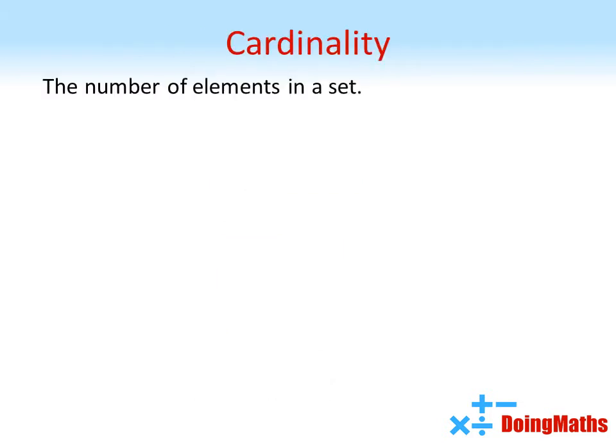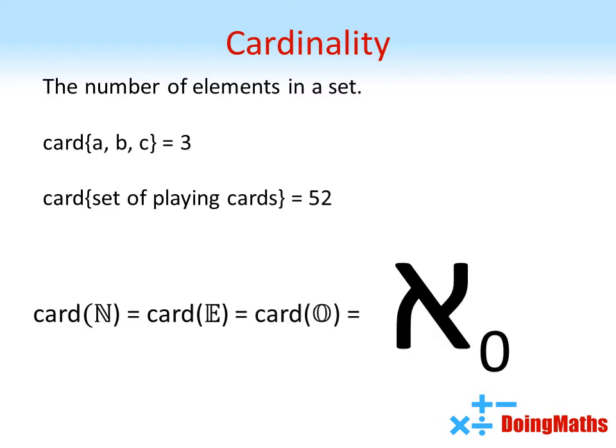We use the word cardinality to describe the size of a set. So the cardinality of the set {a, b, c} is three. The cardinality of a set of playing cards is 52, as there are 52 cards in a set. Now, as there are an infinite number of natural numbers, we need a symbol to denote this infinity. We say that the cardinality of the natural numbers, and hence the evens and the odds as well, is aleph nought, which uses the Hebrew symbol aleph.